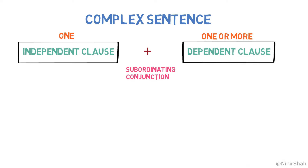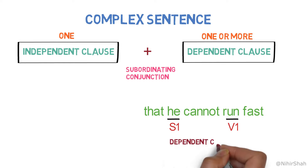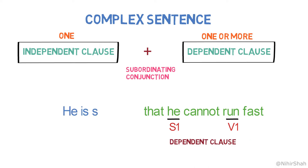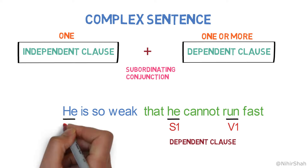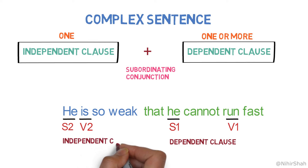Let me write this sentence. Here, this sentence is having a subject 'he' and verb 'run' and it is also having a meaning. However, we feel that the complete sense or meaning is not there, so it's a dependent clause. Now, look at this sentence: 'He is so weak.' Here, 'he' is the subject and 'is' is the verb. This sentence is giving a complete meaning by itself, so it's called an independent clause.